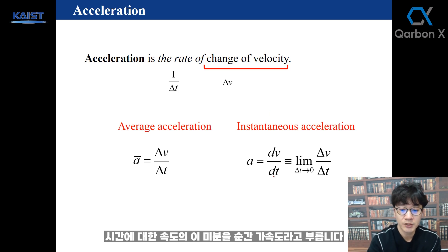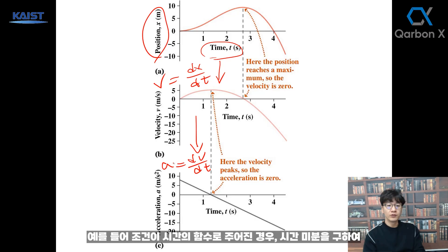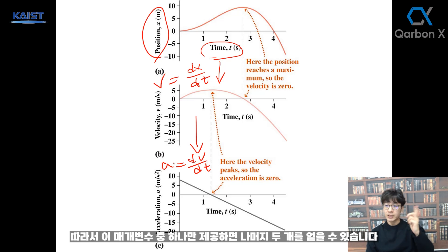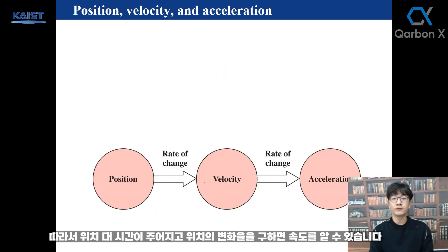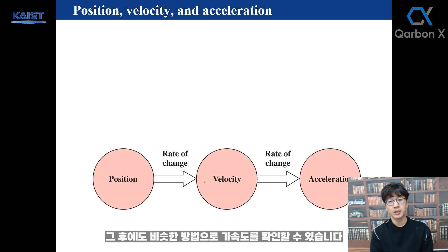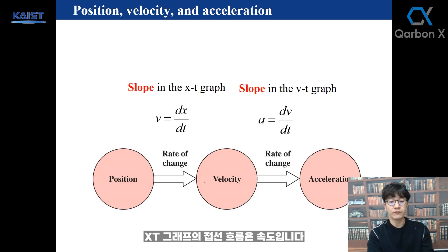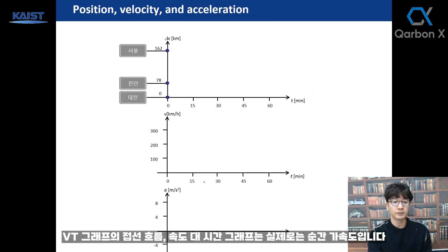The derivative of velocity with respect to time is called instantaneous acceleration. If position is given as a function of time, you can derive velocity by taking the time derivative. You can also get acceleration at every moment. Time derivative means slope — instantaneous tangential slope. In an x-t graph, the tangential slope is velocity. In a v-t graph, the tangential slope is instantaneous acceleration.